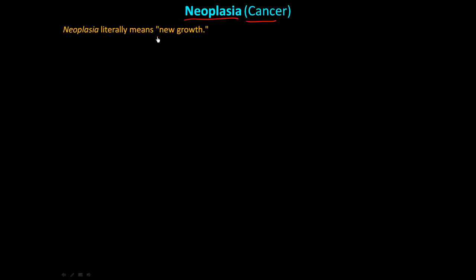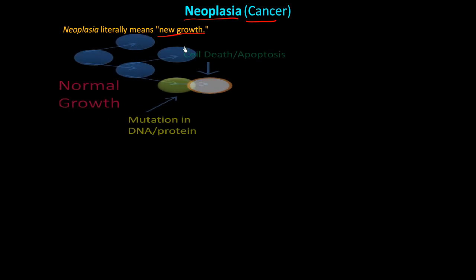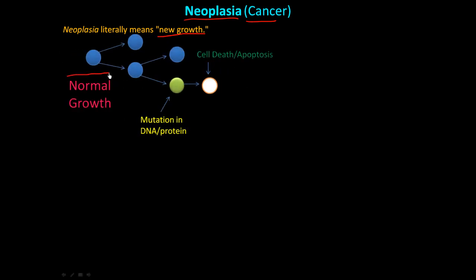Neoplasia literally means new growth. Under normal physiological conditions, a cell gets a signal, a trigger — the environment, some cells die off. If you fall and scrape your knee, those cells are going to die and new cells are going to have to replace the old ones.